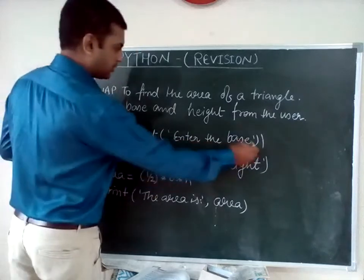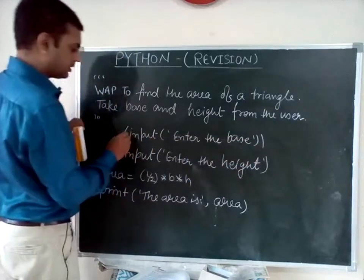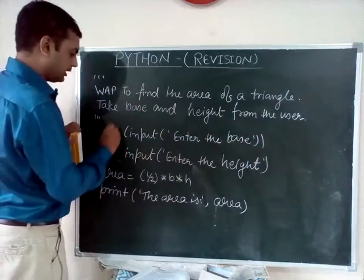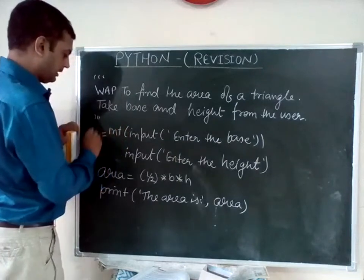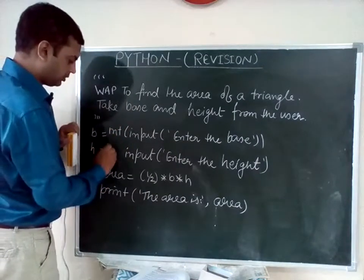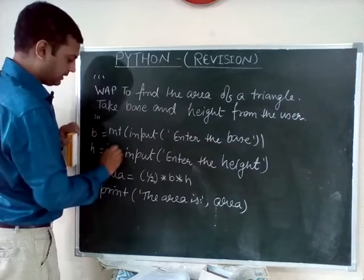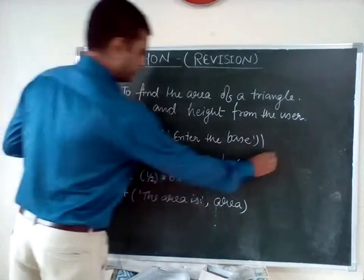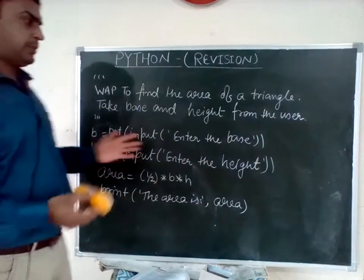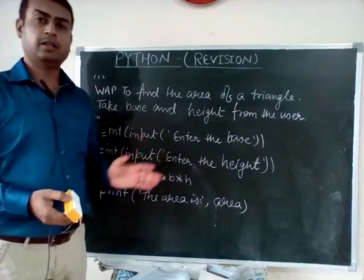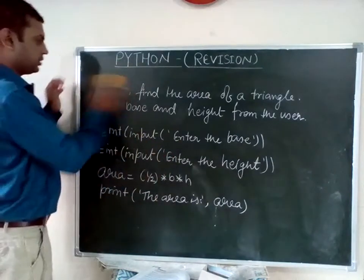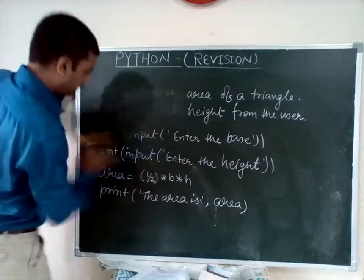This bracket is for this one and this bracket is for the last one. So write int(b) and int(h) — now your program will work properly.